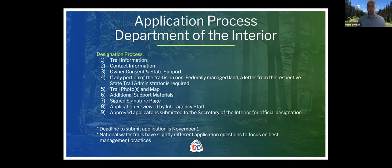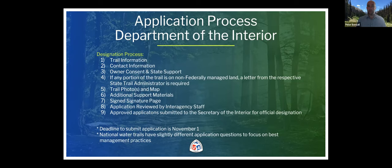Additional supporting materials can include your best management plan or other support materials. Letters of support from community members — such as local nonprofits or businesses that benefit from the trail — are not required but highly encouraged to show how much the trail means to the community. Finally, there is a signed signature page confirming that you meet all the trail eligibility requirements. Once you submit all those pieces of information, your application is complete.